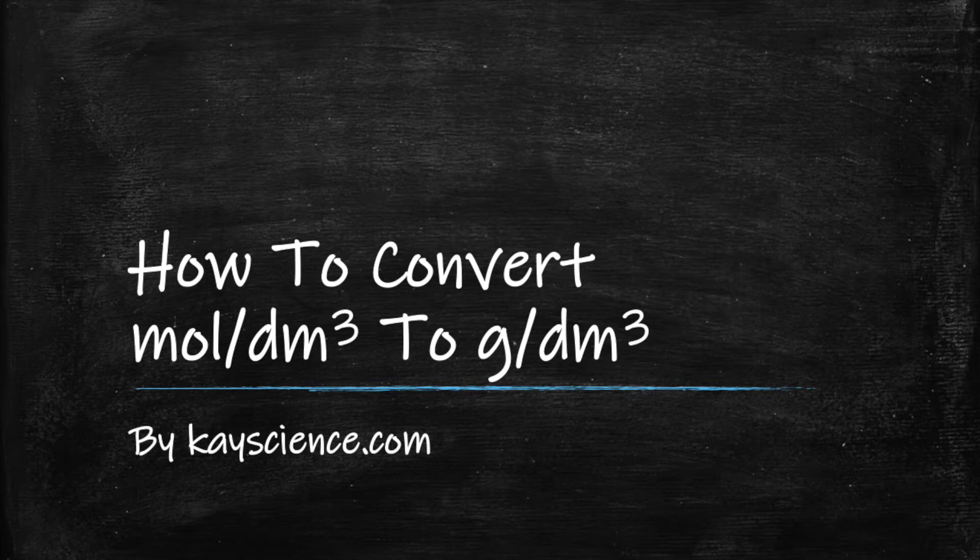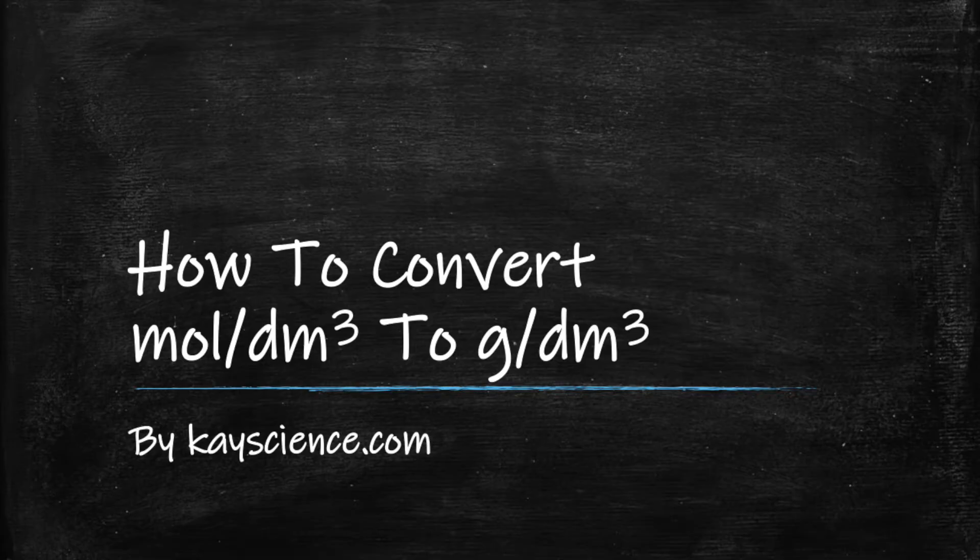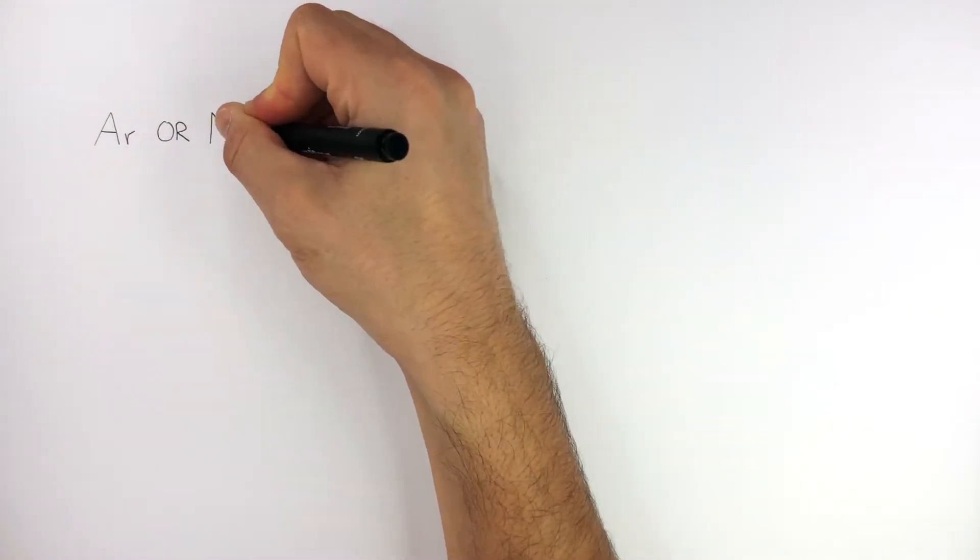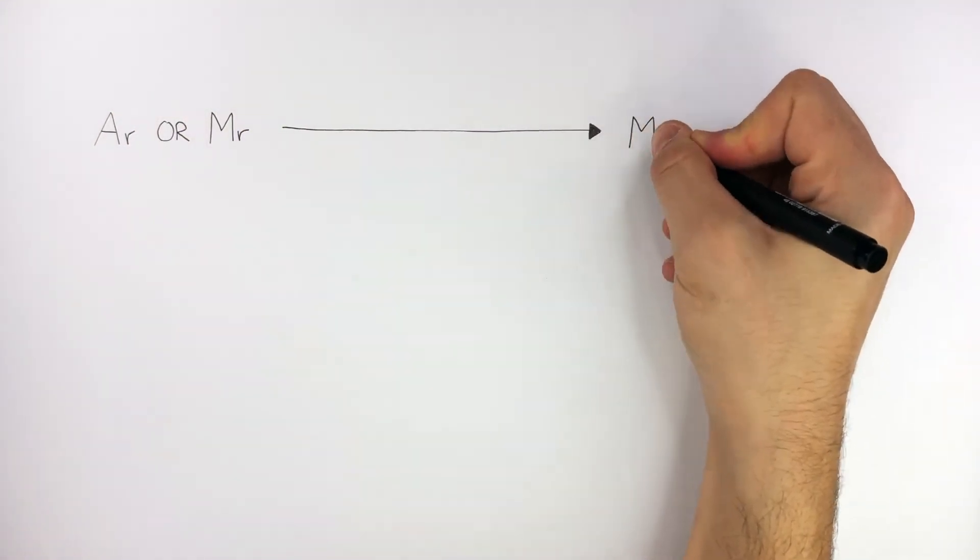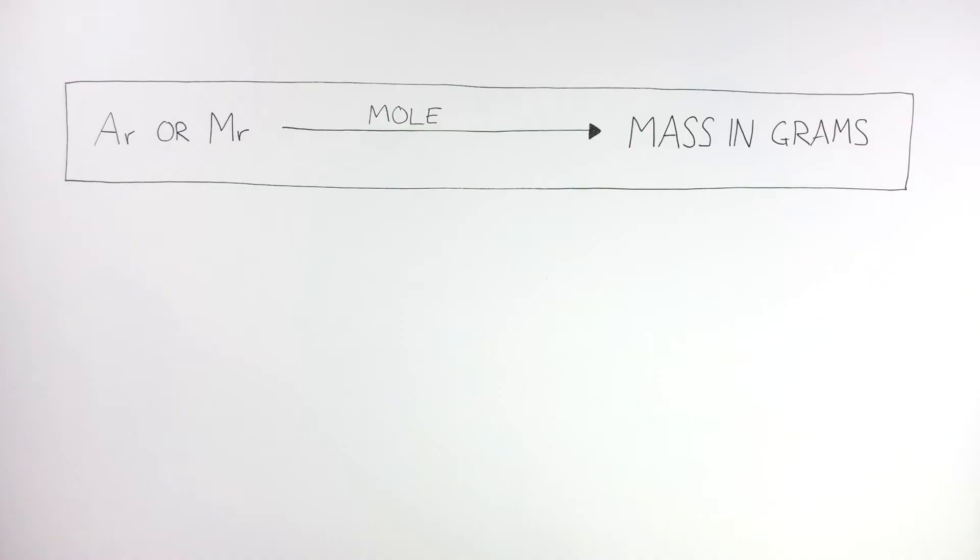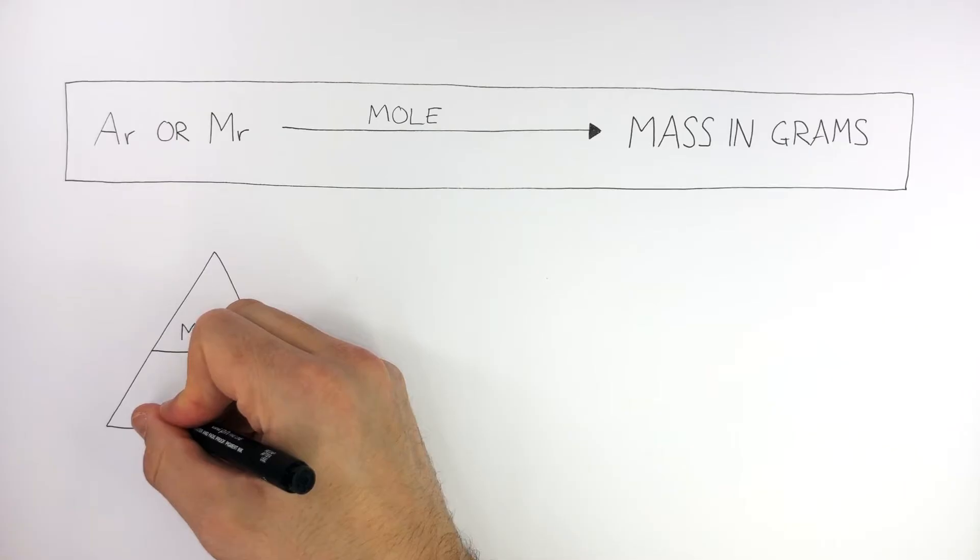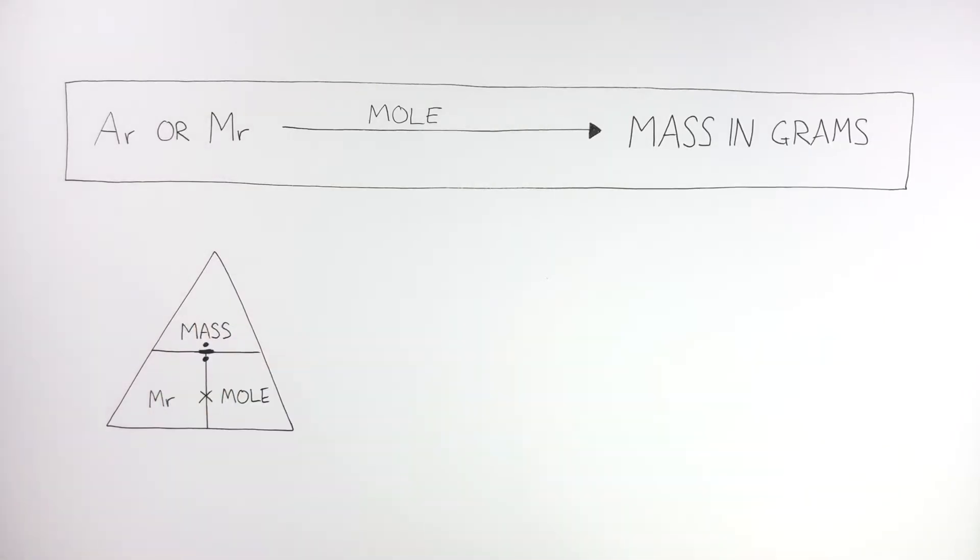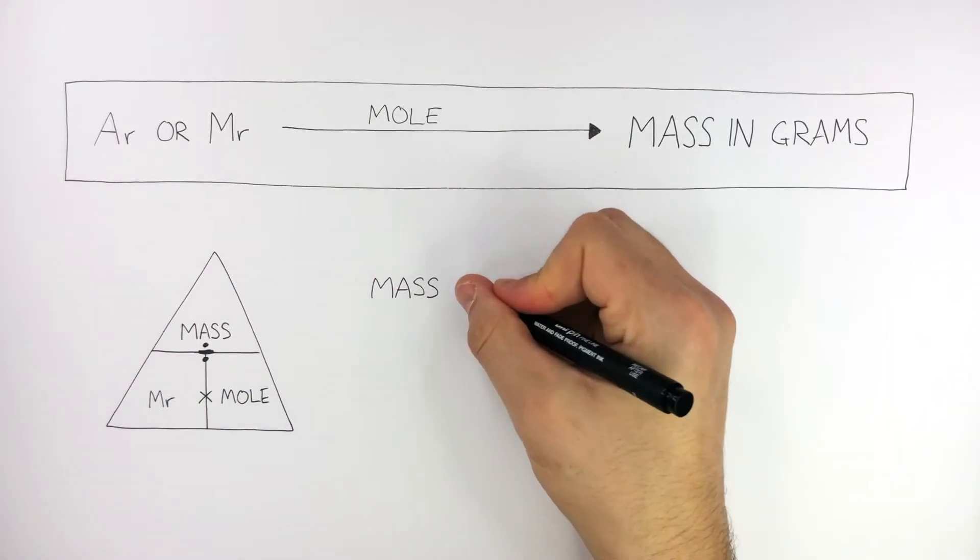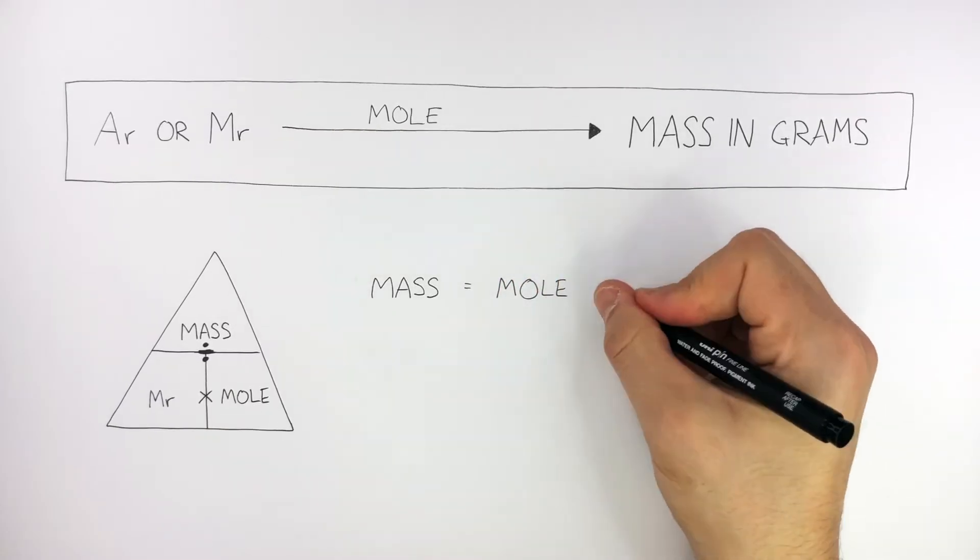How to convert moles per decimeter cubed to grams per decimeter cubed by kscience.com. AR or MR can be converted into mass in grams using the mole. This formula triangle connects mass, MR, and mole. And the equation to calculate mass is mass equals mole times MR.